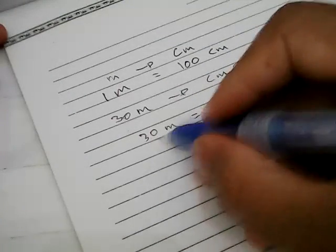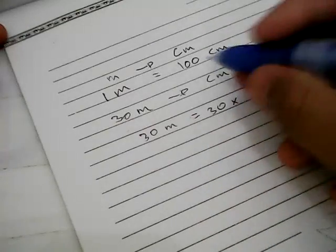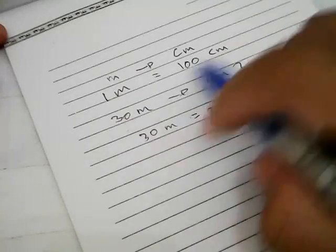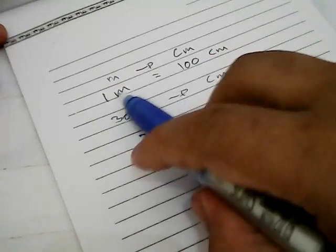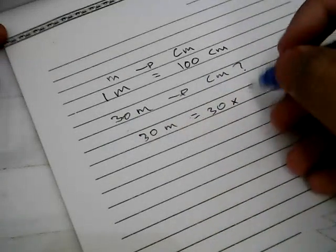And we need to write this 30 again and multiply this 30 with 100 because we want to convert meter to centimeter. So everything that comes before meter, we need to multiply it with 100 centimeter.